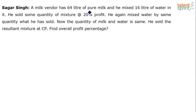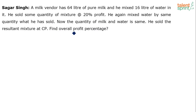A milk vendor has 64 liters of pure milk and he mixed 16 liters of water in it. He sold some quantity of mixture at 20% profit. He again mixed water by the same quantity what he has sold. Now the quantity of milk and water is same. He sold the resultant mixture at the cost price. Find the overall profit percentage.